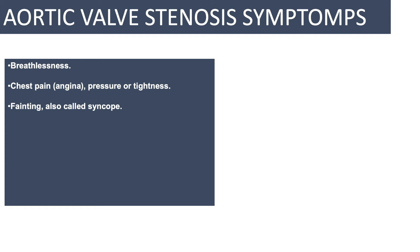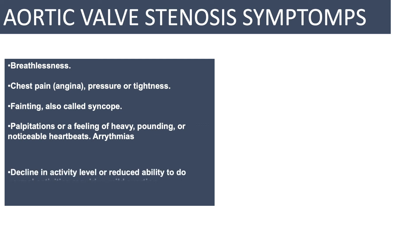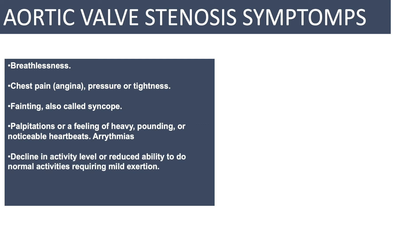Syncope occurs because of decreased blood perfusion to the brain, which will be explained in a later video. Palpitations or arrhythmias such as ventricular arrhythmia and supraventricular arrhythmias can occur. Declining activity is also a sign — someone with aortic valve stenosis may present with breathlessness and chest pain upon mild exertion, resulting in a reduced ability to perform normal activities. This is because of less blood perfusion to the muscles since the heart cannot work as hard.